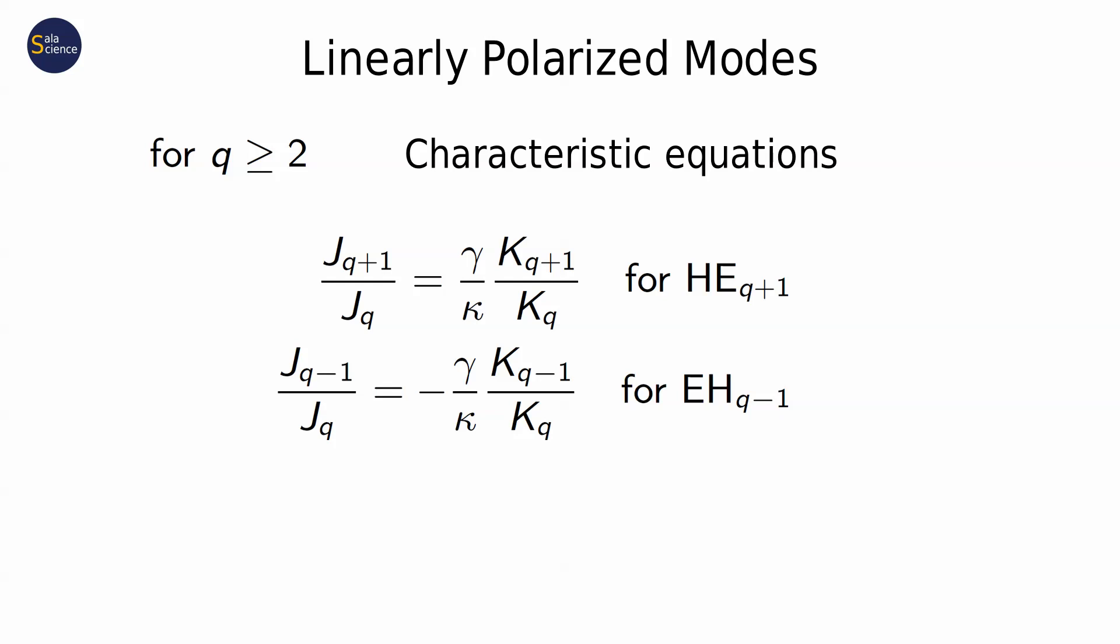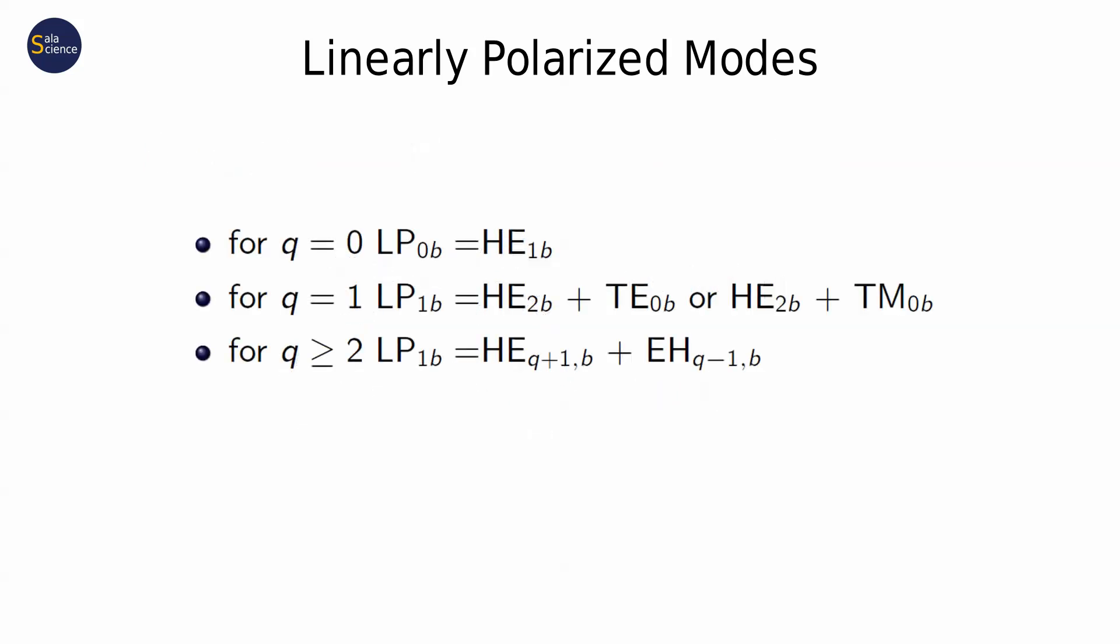It means that both modes have the same propagation constants, so they have the same phase velocity. If so, we can treat a superposition of these two modes as a new virtual mode. We call them linearly polarized modes and denote as LP_QB, where B is a solution number.